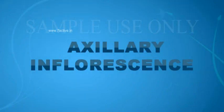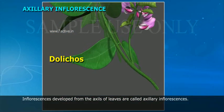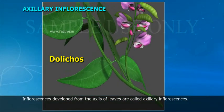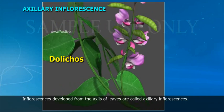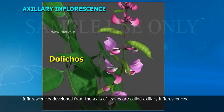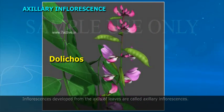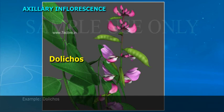Axillary inflorescence: Inflorescences developed from the axils of leaves are called axillary inflorescences. Example: Dolichos.